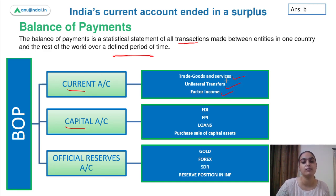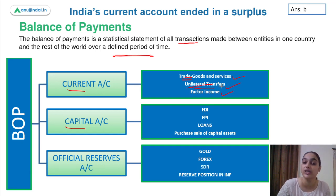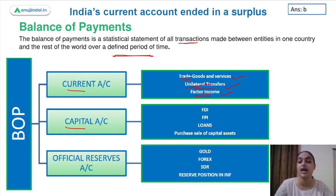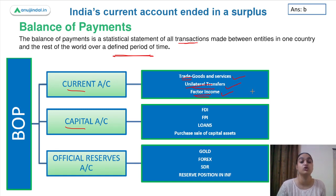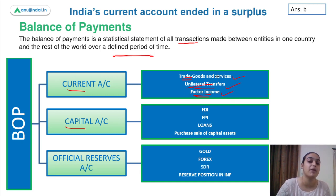The current account comprises trade in goods and services, unilateral transfers, and factor income. Whatever exports and imports of goods and services take place, they are part of the current account. One-sided transfers — such as grants and aids — are included under unilateral transfers. Factor income includes interest, profit, or rentals earned or paid on investments coming into or going out of your country. So all such payments or receipts are part of factor income.